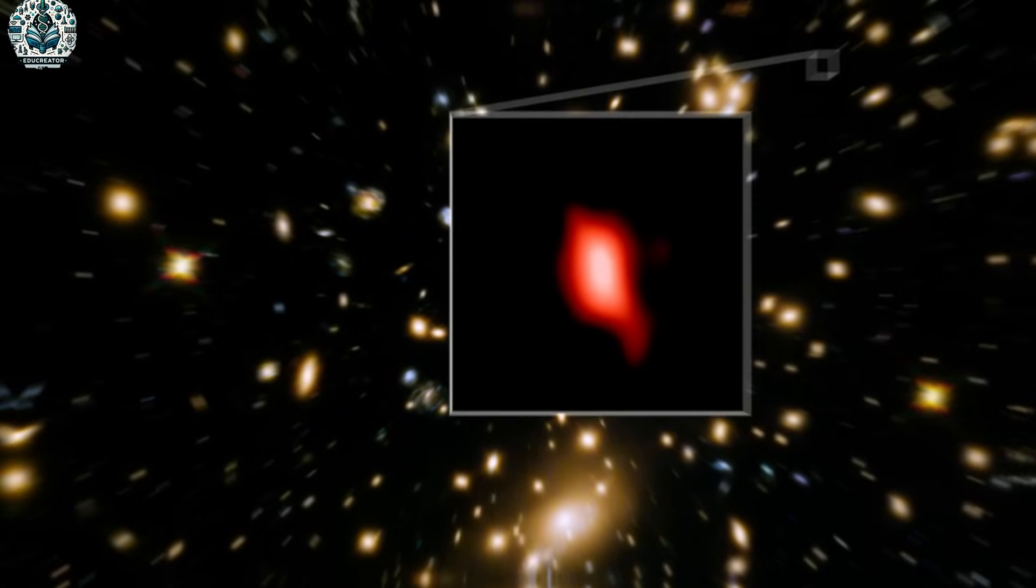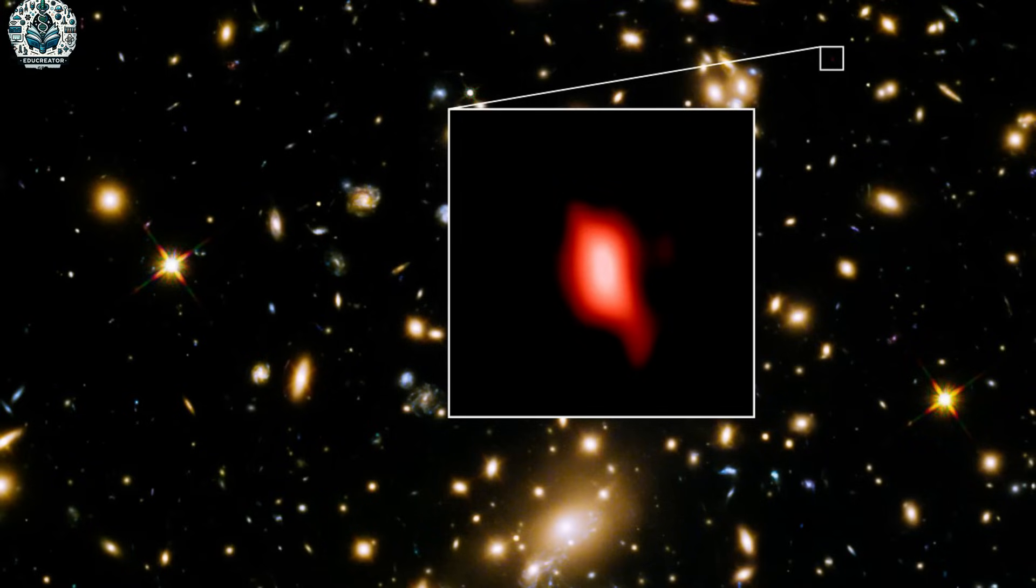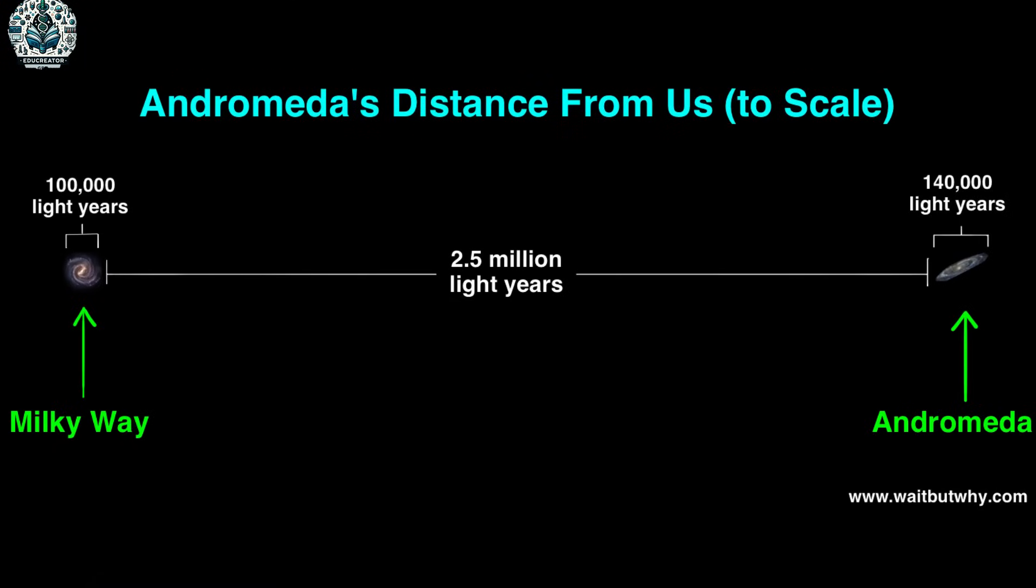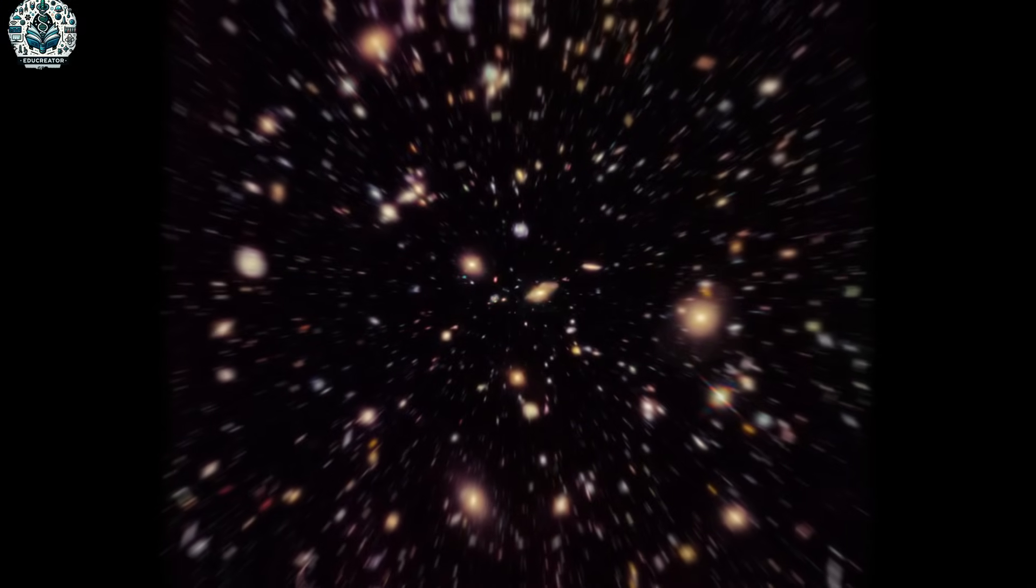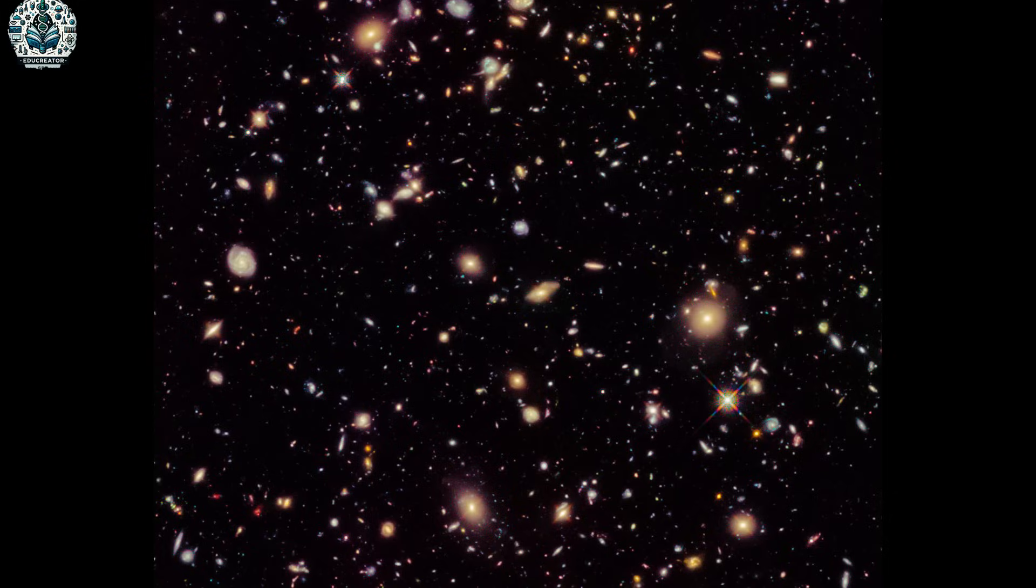As we extend our gaze further into the cosmos, the journey through time deepens. The Andromeda galaxy, our galactic neighbor, lies about 2.5 million light years away. The light that reaches us from Andromeda shows us how this galaxy looked 2.5 million years ago. This cosmic time travel reaches its peak when we observe galaxies that are billions of light years away. These distant galaxies offer us a window into an era close to the Big Bang itself. The light from these galaxies embarked on its journey billions of years ago, carrying with it secrets from the dawn of the universe.